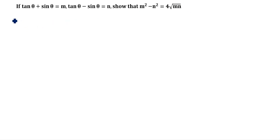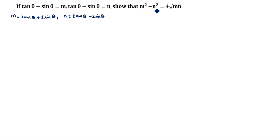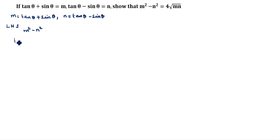What is given? m = tan θ + sin θ, and n = tan θ - sin θ. We will prove LHS equal to RHS. We will take LHS now: m² - n². We substitute m = tan θ + sin θ and n = tan θ - sin θ.